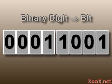In a binary number, the digits can only be 0 or 1, instead of the 0 through 9 that we have in decimal. Each digit in a binary representation is called a bit, which is short for binary digit.